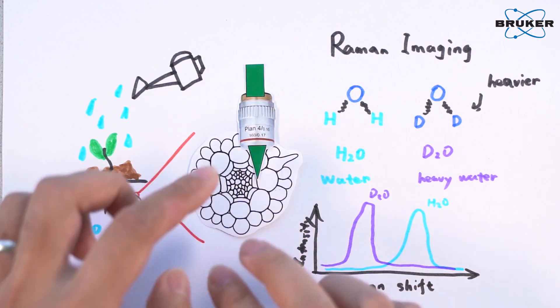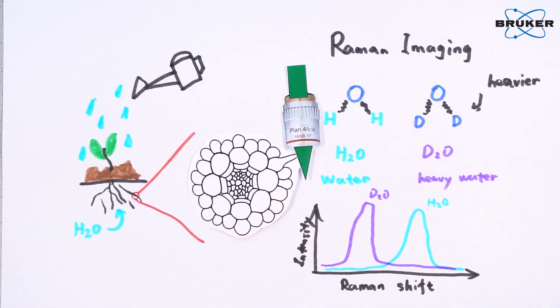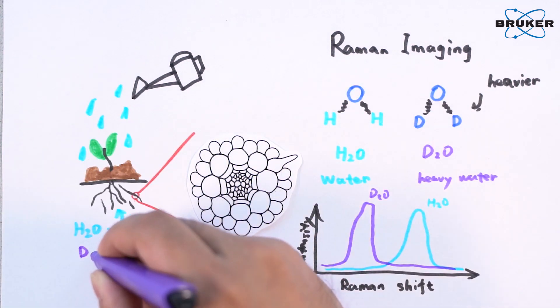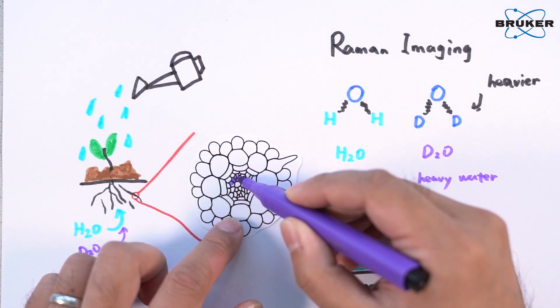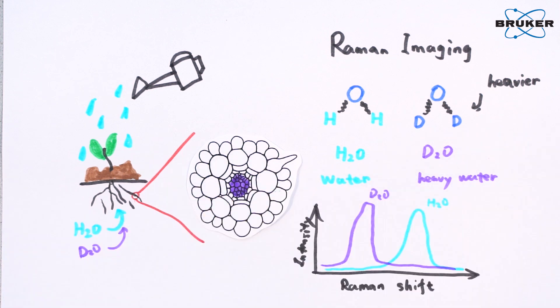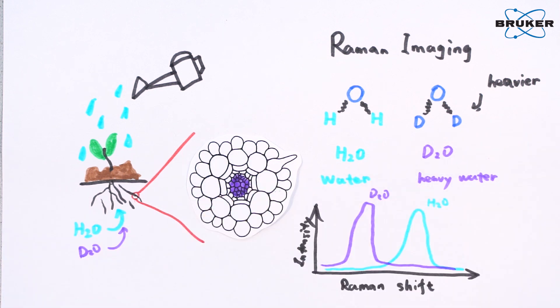In this experiment, the laser scans the root tissue of a living Arabidopsis plant while the root is washed with heavy water. Meanwhile, the scientists can trace how heavy water is trapped in the core of the root tissue.